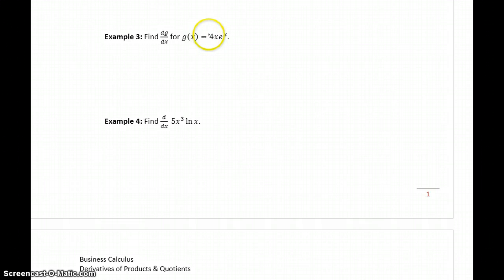So, looking at example 3, we can identify our first function as 4x and our second function as e to the x.